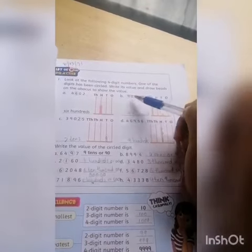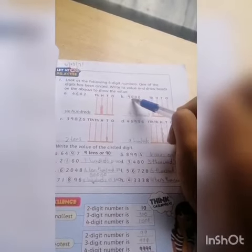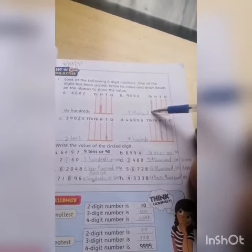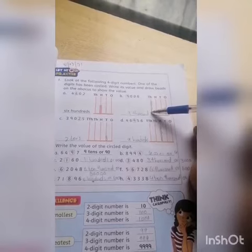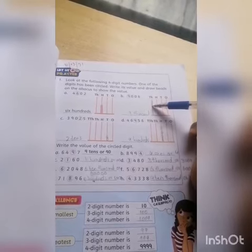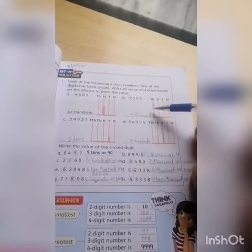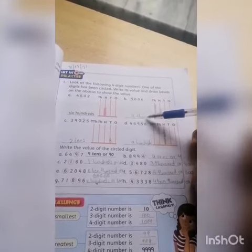Second question is circled digits: unit, ten, hundred, thousand. Nine thousand - here is a thousand. We draw the beads. Nine: one, two, three, four, five, six, seven, eight, nine. You draw the beads like this. Nine, and this value is nine thousand. You solve all these questions like this.